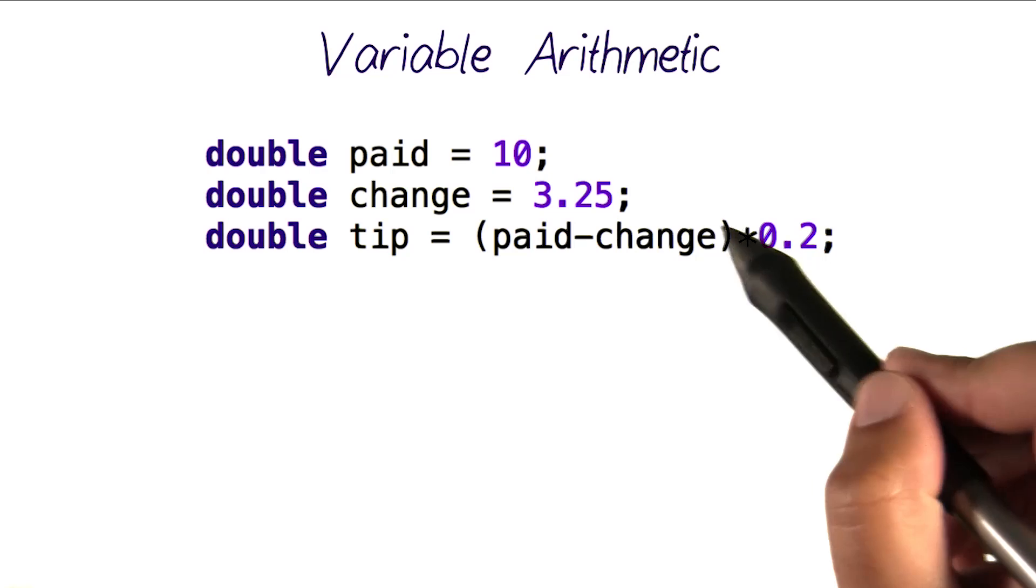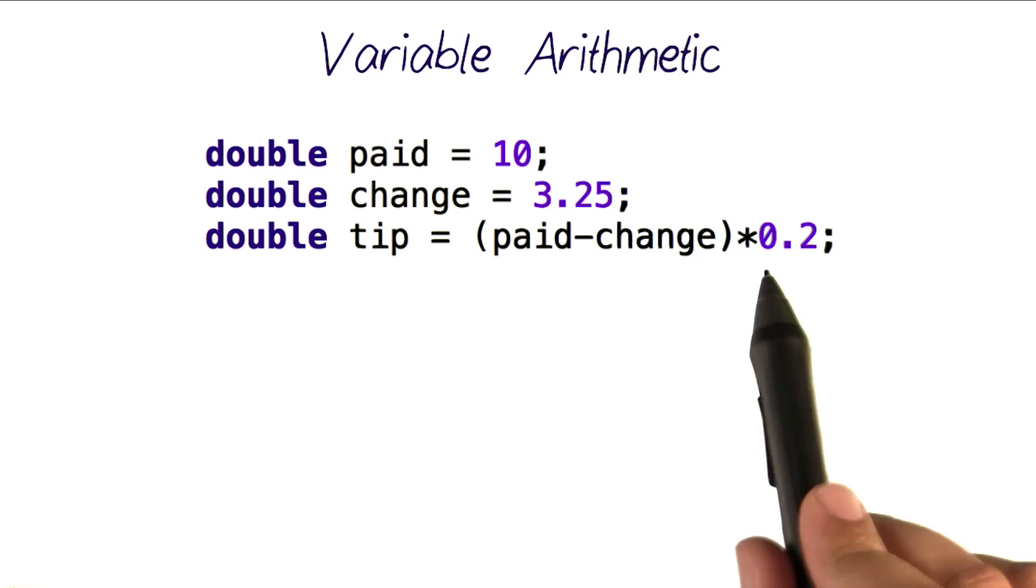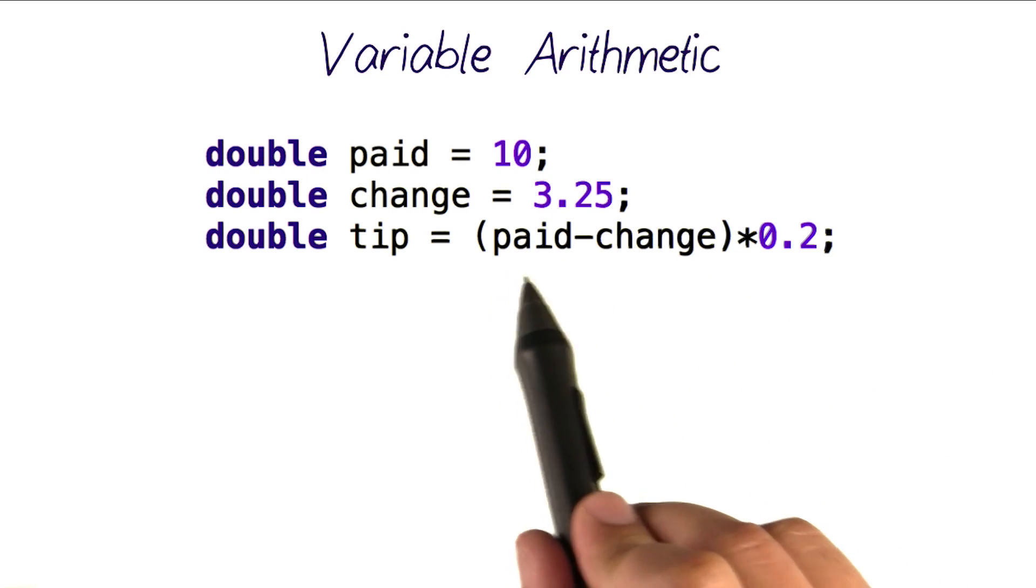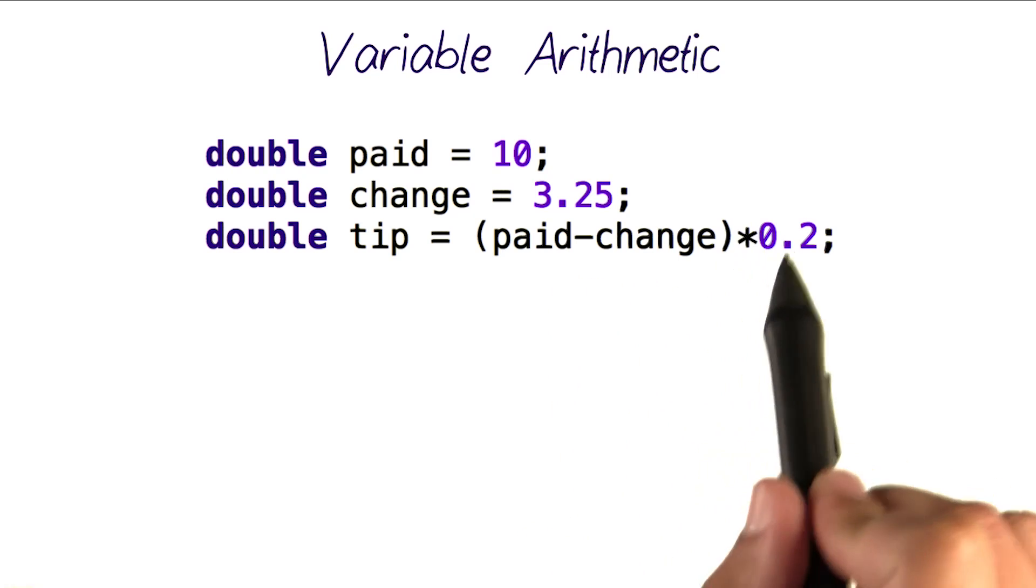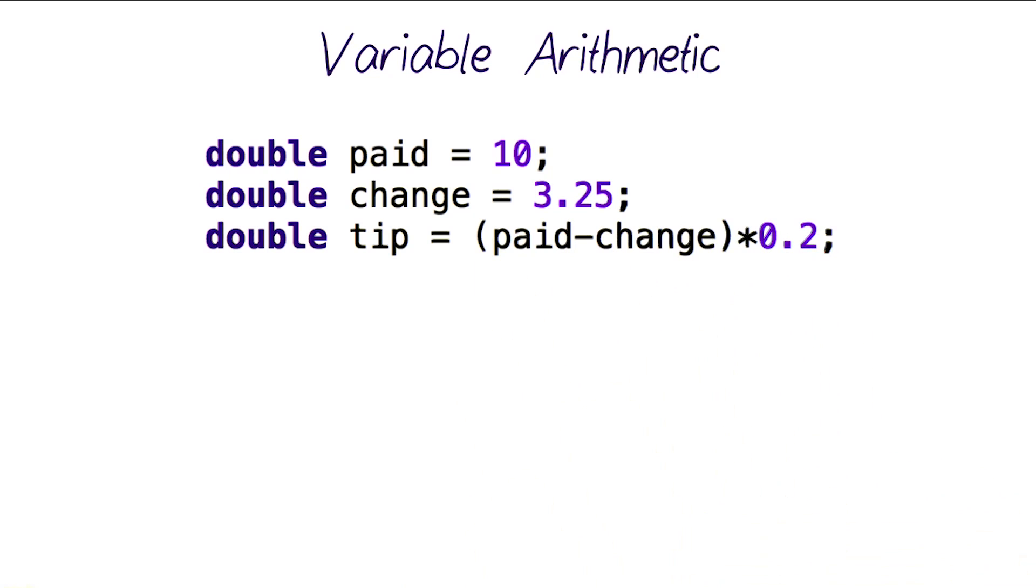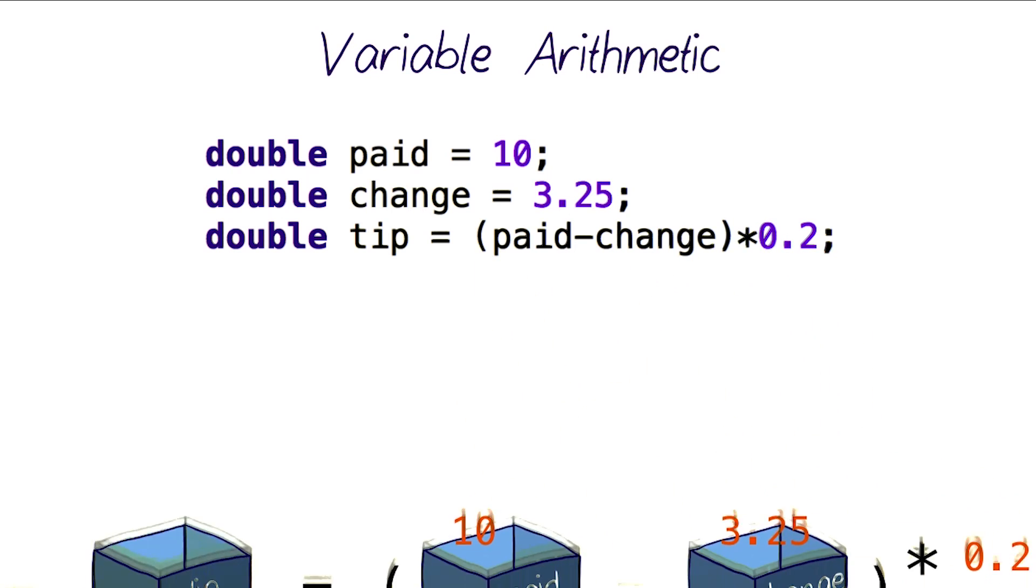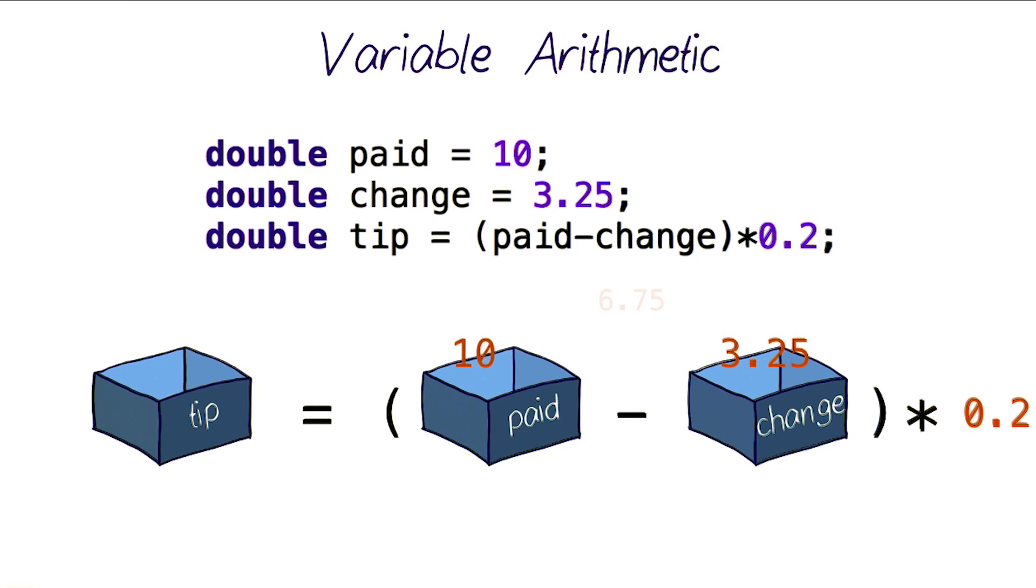Notice how I've used this set of parentheses around the subtraction here before I do the multiplication. This is to force the computer to apply the subtraction before it does the multiplication over the result of that subtraction. So in this case, what would happen is, paid minus change would calculate the value of 6.75, and then that result would get multiplied by 0.2, which would evaluate to 1.35, and that would get stored in the variable tip. So I know I have to pay $1.35 tip.